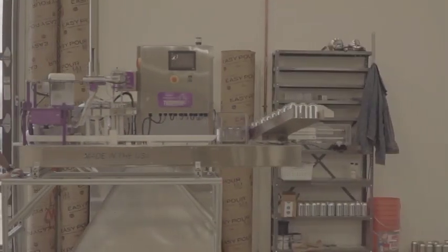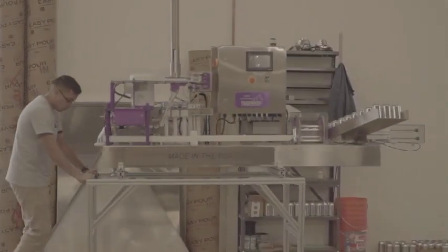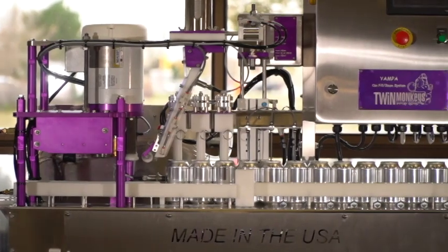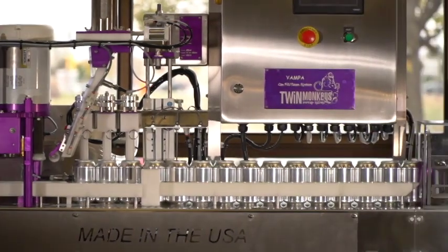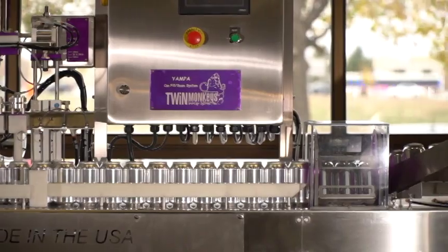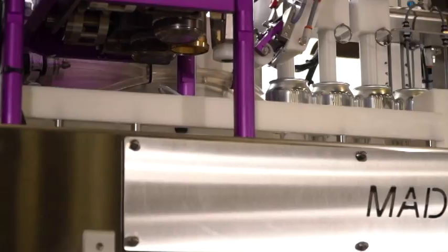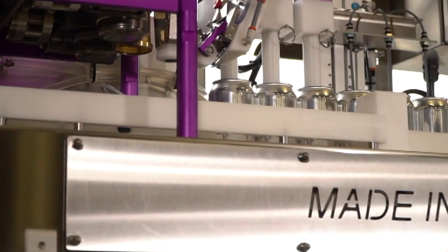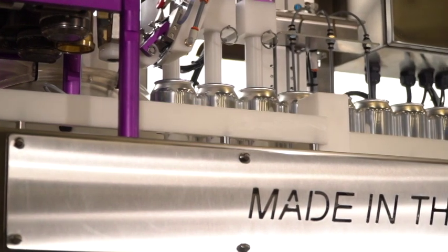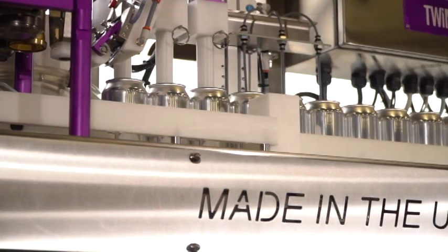Twin Monkeys has three different canning lines. We have a family starting with a tabletop small canner that we call the Yampa. We then go to an Animus, which is an automated canning line with a conveyor belt that can be expanded to a San Juan. People can start with a small tabletop canning line that doesn't take up much footprint and has lots of options available to it.